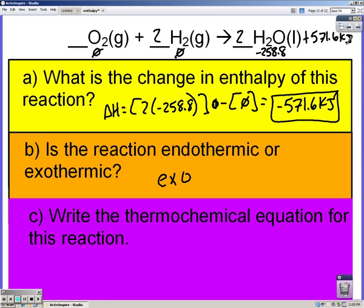Another way of writing it instead of saying negative 571.6 is to write it part of the equation to make it a thermochemical equation. When we add it as a product we just say that it's positive 571.6 because the only reason that delta H is negative is to show that energy is being released because you can't see it in the reaction.